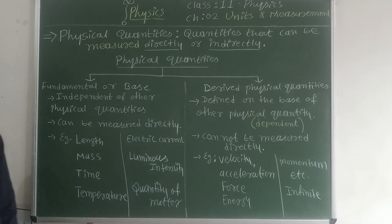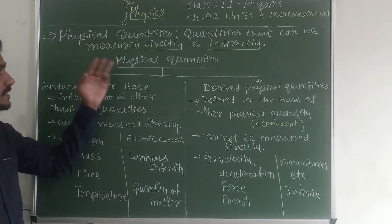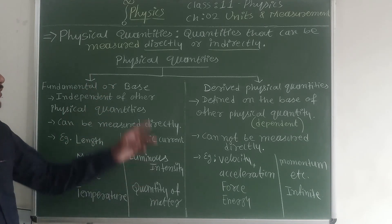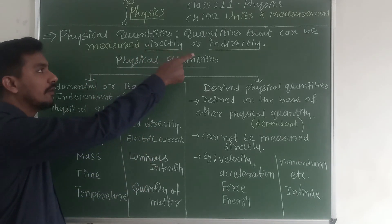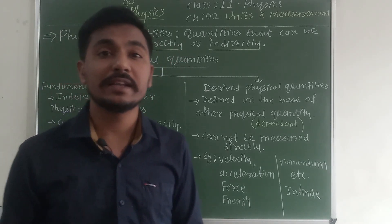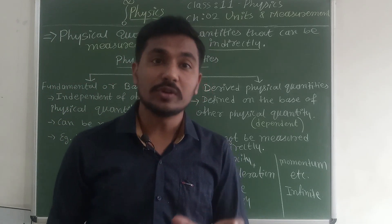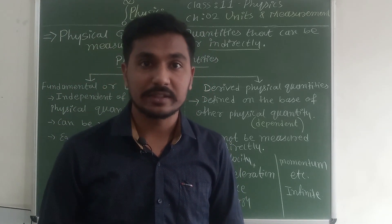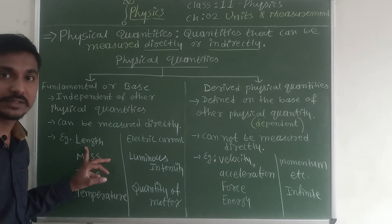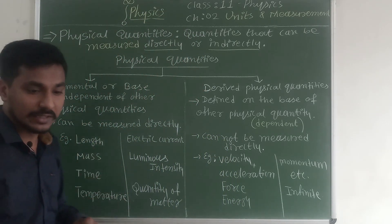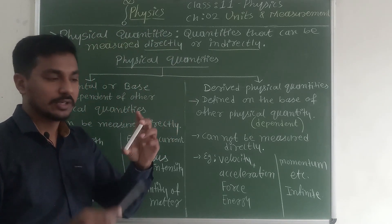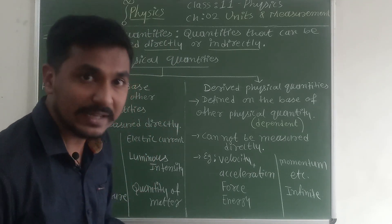In this lecture, we will discuss physical quantities. So, what is a physical quantity? Quantities that can be measured directly or indirectly. For example, length — we can measure that directly. I want to measure the length of the chalk, so with the help of this scale, I can measure the length directly.